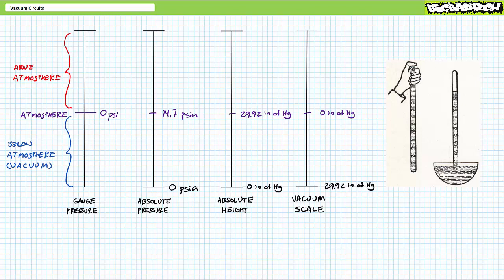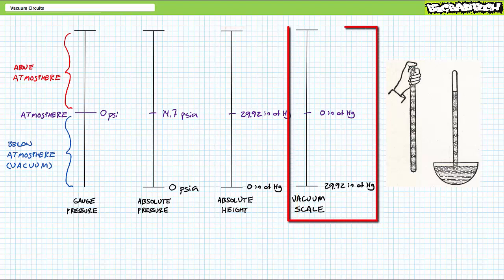If you think about it, we're dealing with four linear scales. Gauge pressure that starts at atmospheric conditions and goes up as pressure goes up. Absolute pressure that starts at vacuum conditions, which also goes up as pressure goes up. Absolute height that also starts at vacuum conditions, which also goes up as pressure goes up. And finally, the vacuum scale, which starts at atmospheric conditions, however, goes up as pressure goes down.